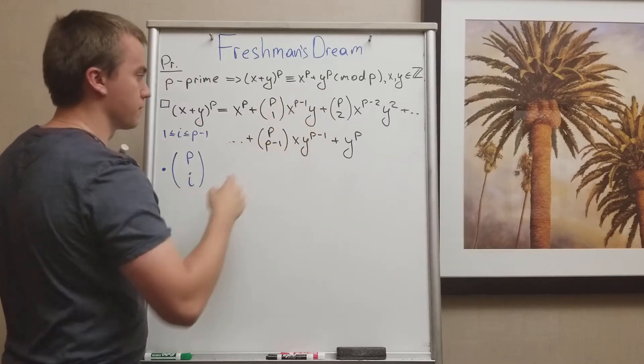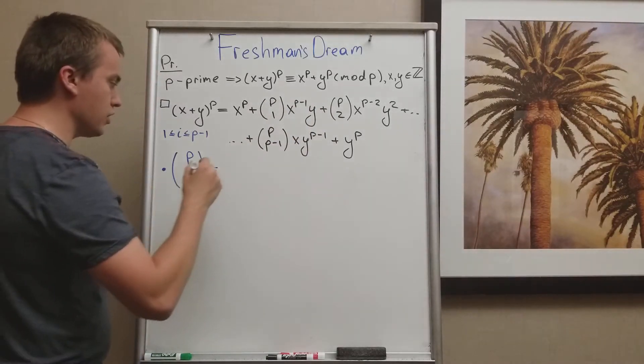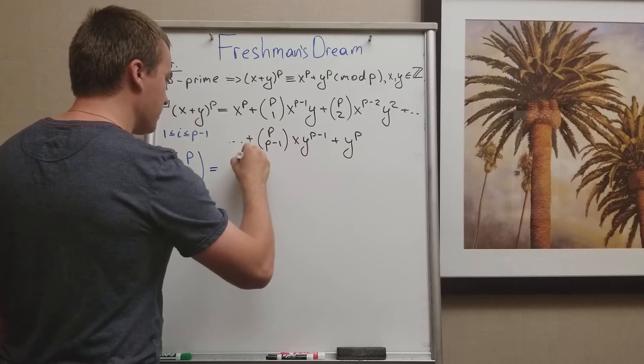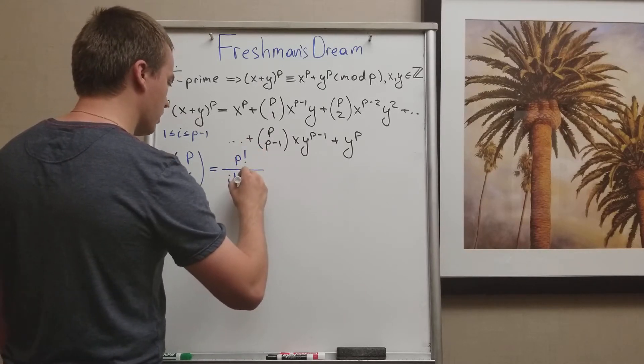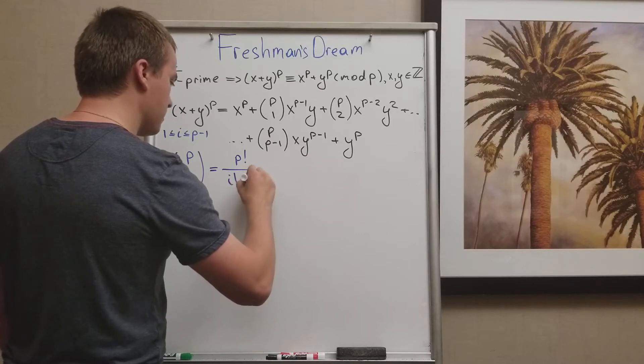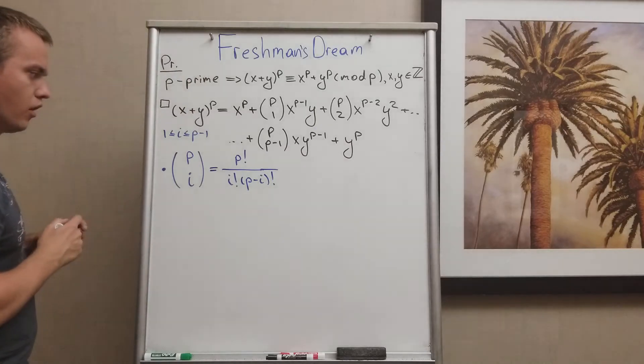You can see this based on this picture. And then what I know about p choose i, I know it's going to be equal to p factorial over i factorial times p minus i factorial.